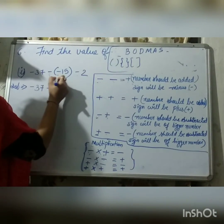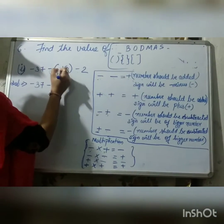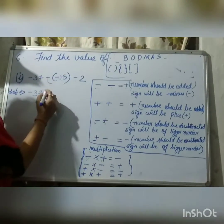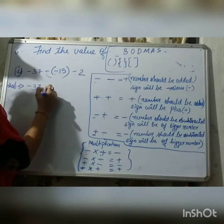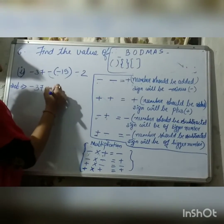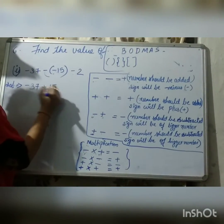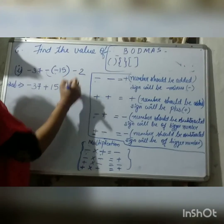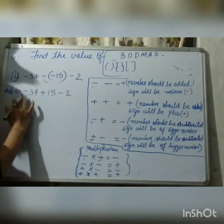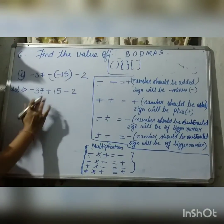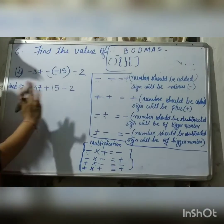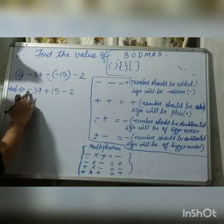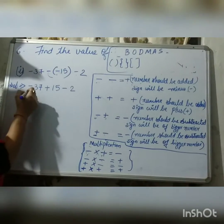So, this minus will get multiplied with minus when we open the bracket. Minus into minus gives plus. So, this 15 will become plus, then we'll write minus 2. Now, the bracket has been removed, giving minus 37 plus 15.